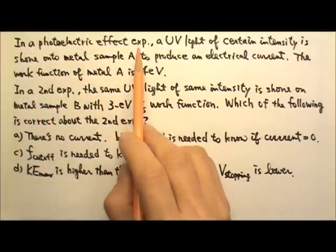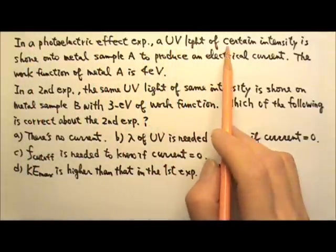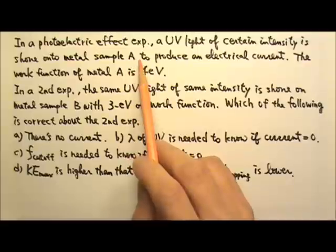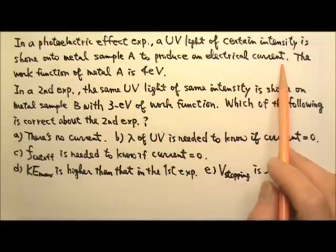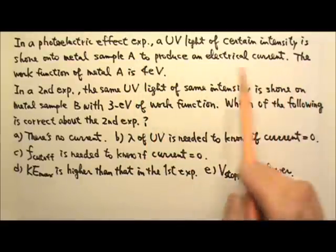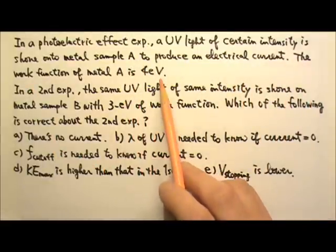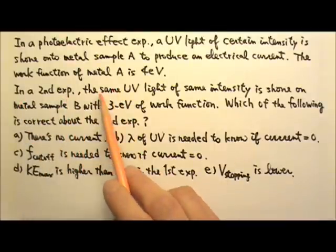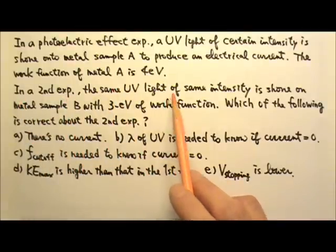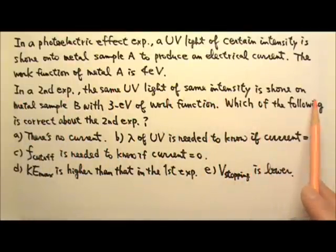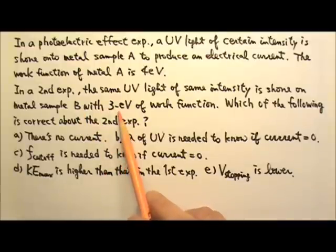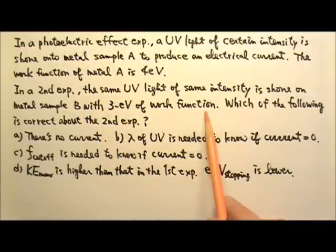In a photoelectric effect experiment, a UV light of certain intensity is shown onto metal sample A to produce an electric current. The work function of metal A is 4 eV. In a second experiment, the same UV light of the same intensity is shown on metal sample B with a work function of 3 eV.